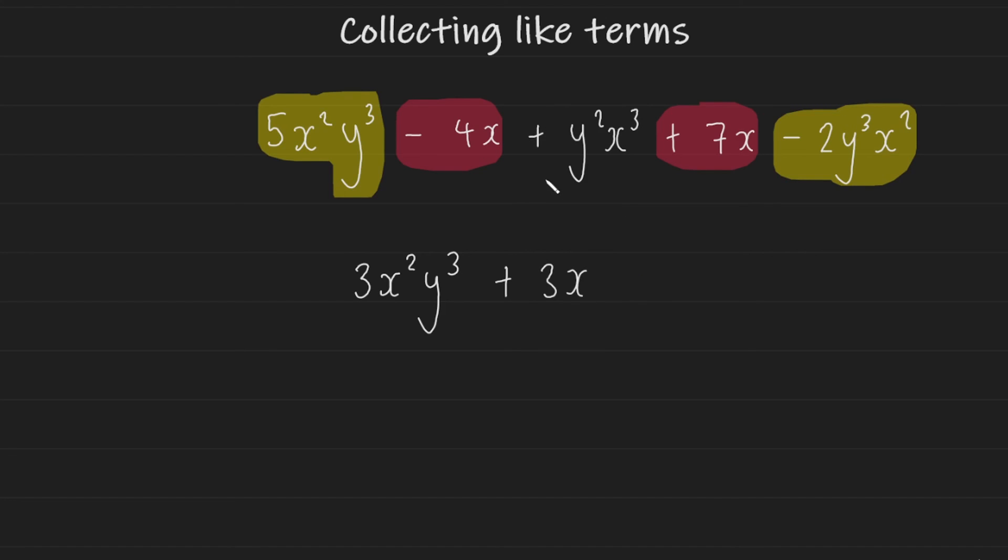And finally we have a term on its own that we can't combine with anything, so we're just going to go ahead and write it in alphabetical order. So we have x cubed, y squared. And that's pretty much it for collecting like terms, guys.